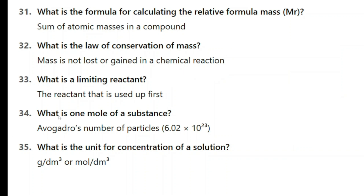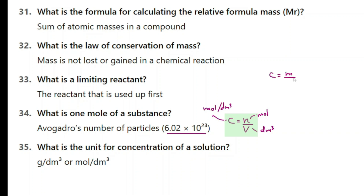Question 34: one mole is the Avogadro's number of particles, which is 6.02 times 10 to the power of 23. What is the unit for concentration of a solution? Concentration is given by number of moles over volume. Number of moles is measured in moles and volume in cubic decimetres, so concentration can be measured in moles per cubic decimetre. You can also measure concentration as mass over volume — grams per cubic decimetre. One cubic decimetre is the same as 1000 cubic centimetres.